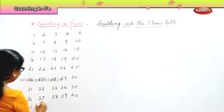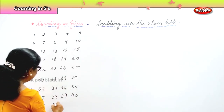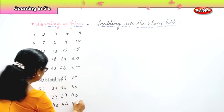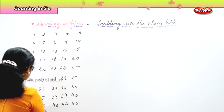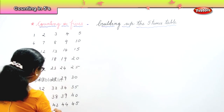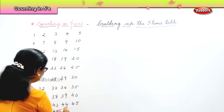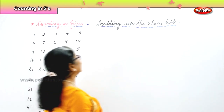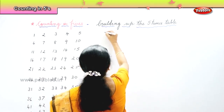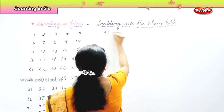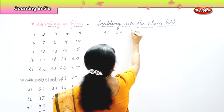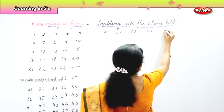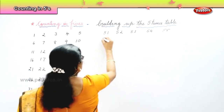Forty-one, forty-two, forty-three, forty-four, forty-five. Forty-six, forty-seven, forty-eight, forty-nine, fifty. Fifty-one, fifty-two, fifty-three, fifty-four, fifty-five, fifty-six.